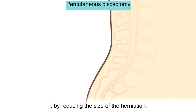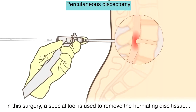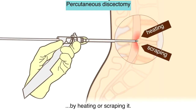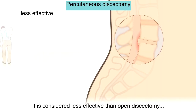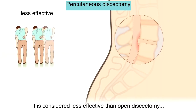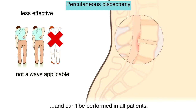Percutaneous discectomy treats herniated discs by reducing the size of the herniation. In this surgery, a special tool is used to remove the herniated disc tissue by heating or scraping it. It is considered less effective than open discectomy and cannot be performed in all patients.